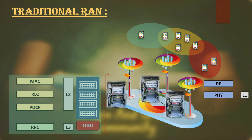In the traditional network system, the resources and capacity are very specific to the cell or site. The problem with this type of system is that if the cell is underutilized, then the resources in the cell or site will be wasted. And if the traffic on the cell or site is high, then it will require the addition of more capacity and hardware to the specific site.